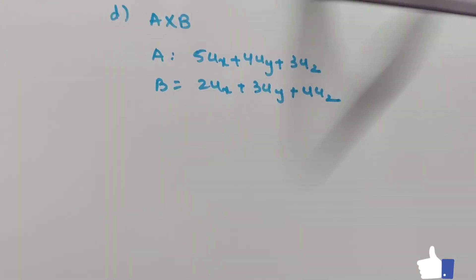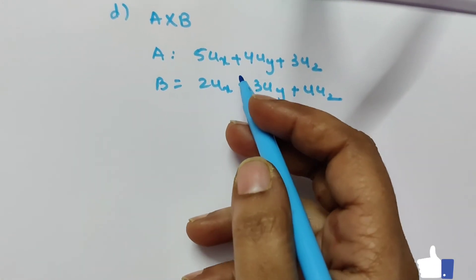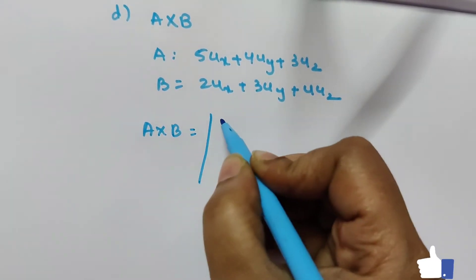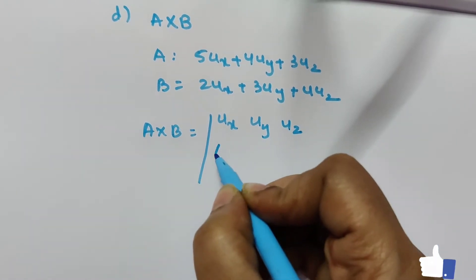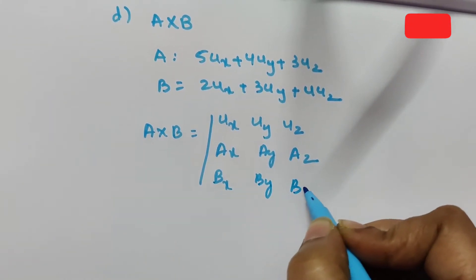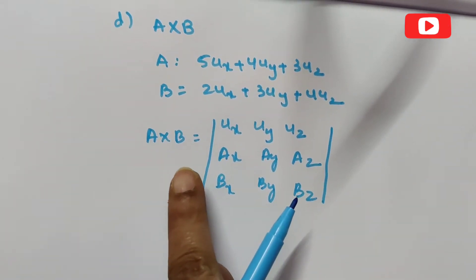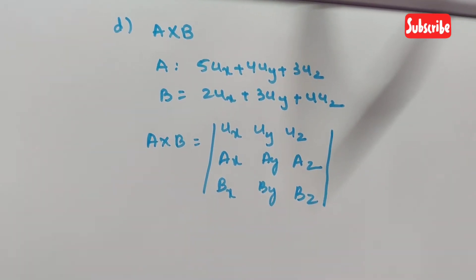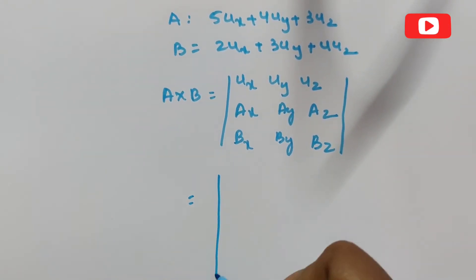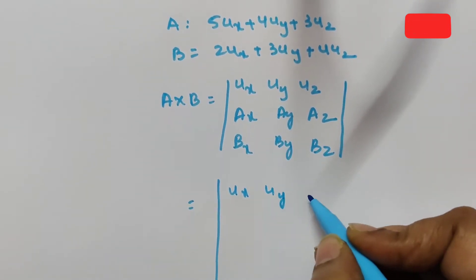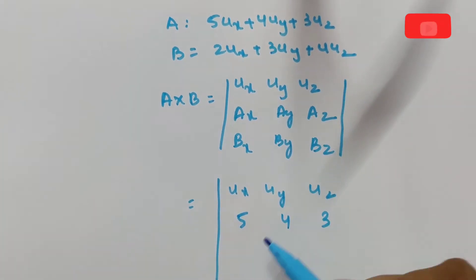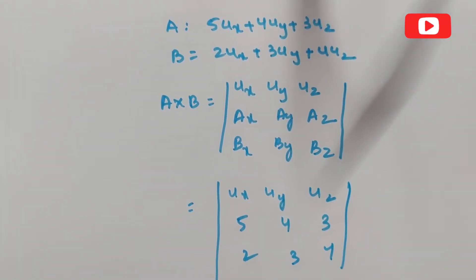Now for A cross B. We write the determinant: | ux  uy  uz | | 5   4   3 | | 2   3   4 |. To find the cross product, we expand this determinant just as in mathematics.